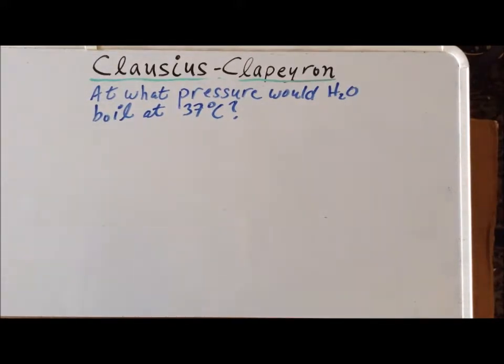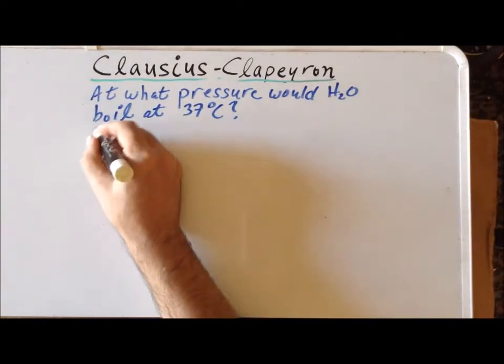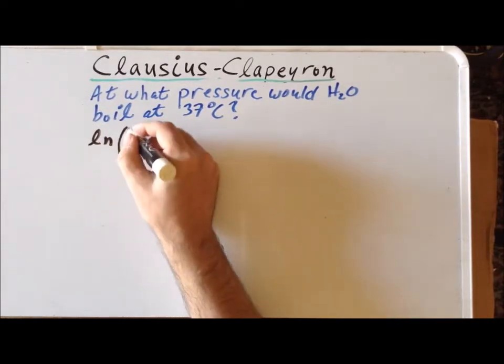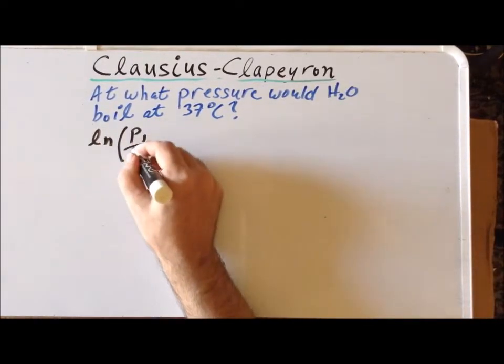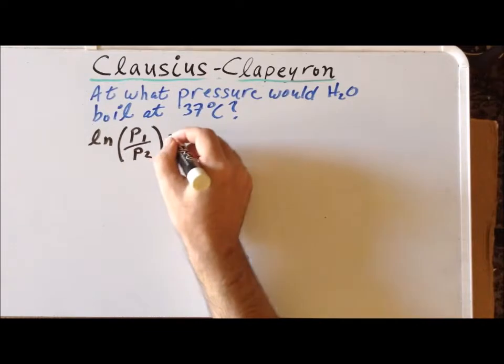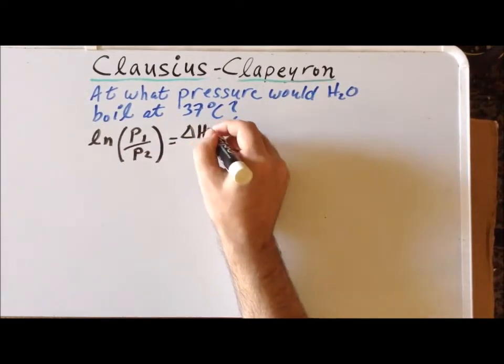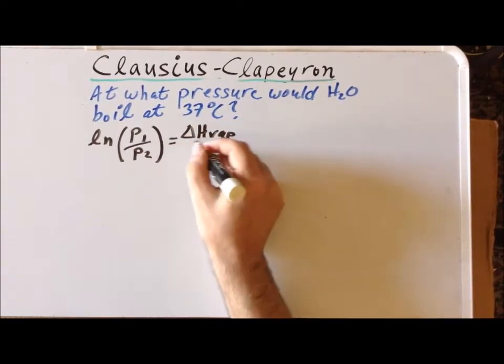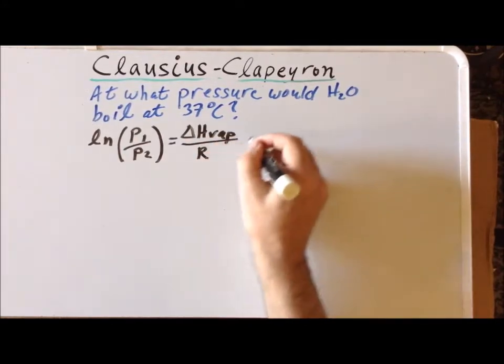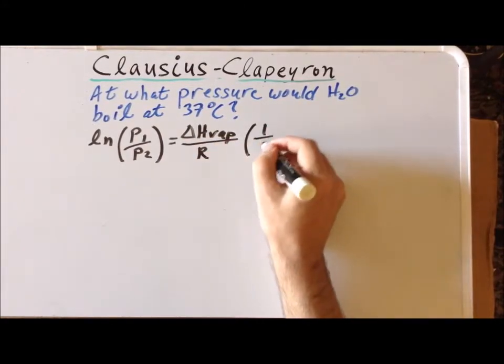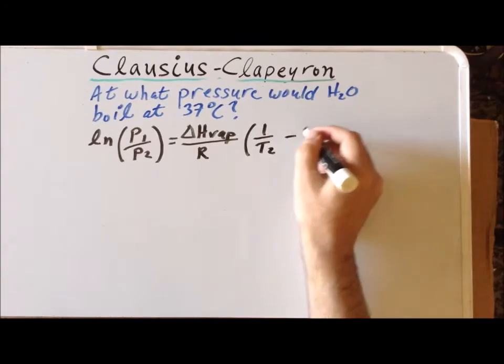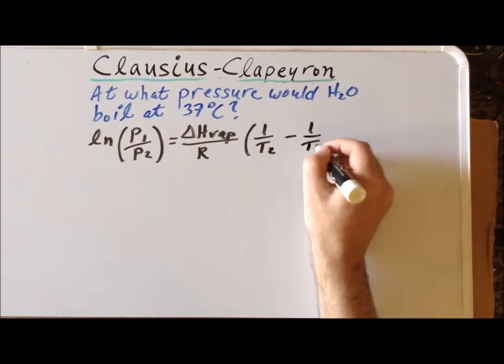Welcome back. To solve this problem, we need to apply the Clausius-Clapeyron equation. Recall the equation tells us that the natural log of the partial pressures will be equal to the enthalpy of vaporization of the liquid divided by R times the inverse of temperature 2 and temperature 1.